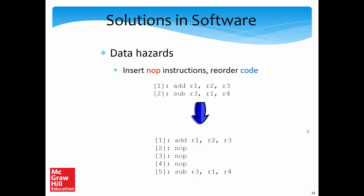Welcome back. In the previous lecture we talked about the different kinds of hazards, so in this lecture we shall look at solutions both in software as well as in hardware. Let's consider an example: the first instruction writes to register R1 and the second instruction reads from register R1, so there is a RAW dependence, which is a problem in our pipeline. When instruction 2 needs the data for register R1, instruction 1 would not have written it yet.